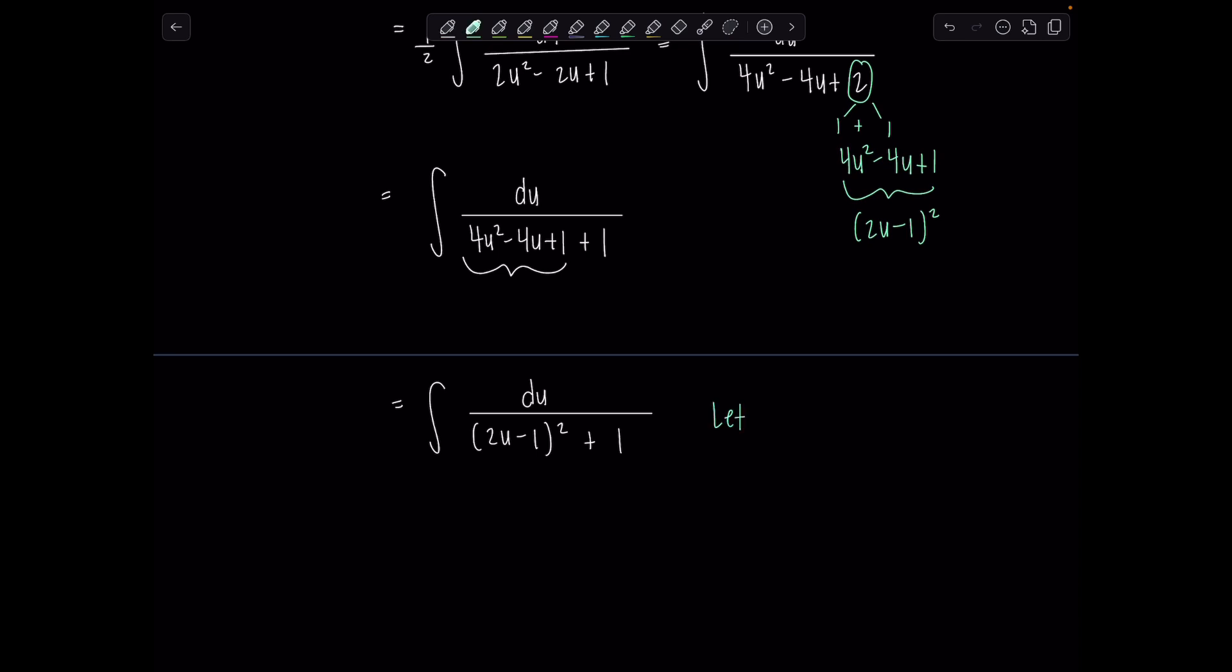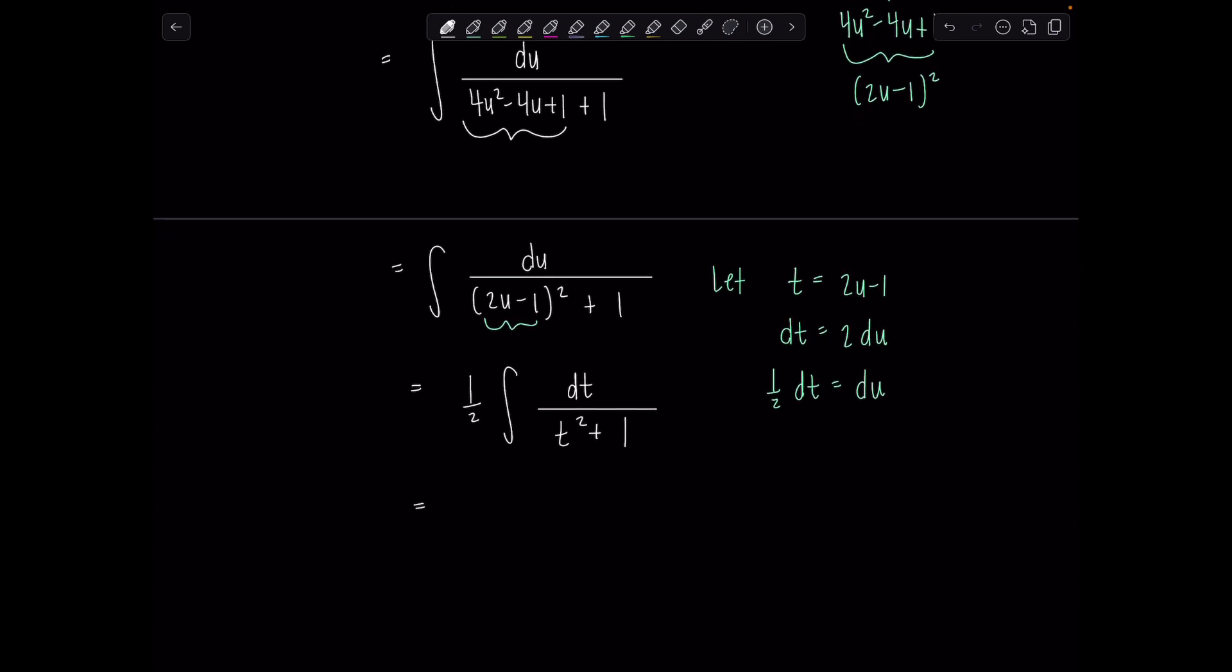Let's let t be that variable quantity right there, two u minus one. So then dt is two du, so one-half dt is du, and then notice now we've got here one-half integral dt over t squared plus one. Do you recognize the antiderivative now?